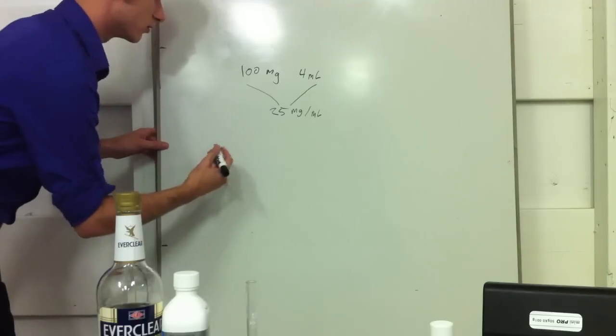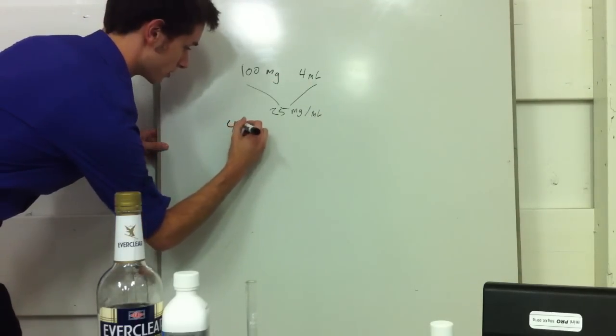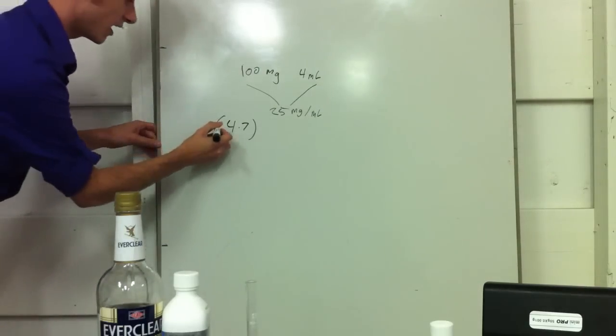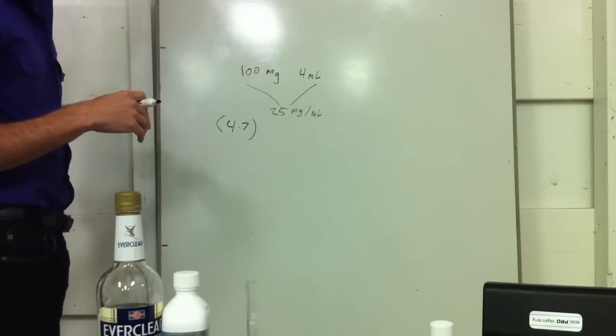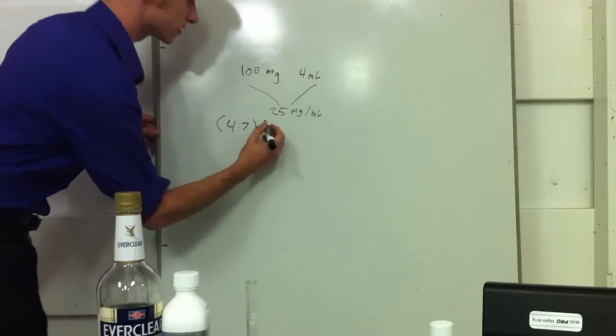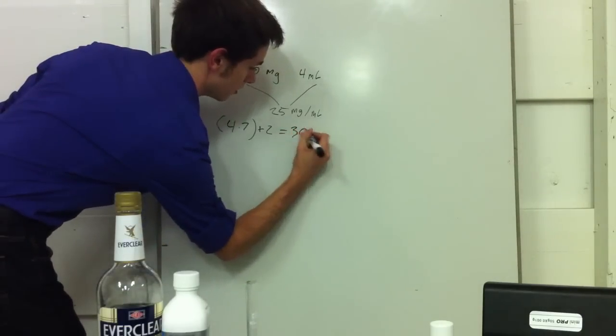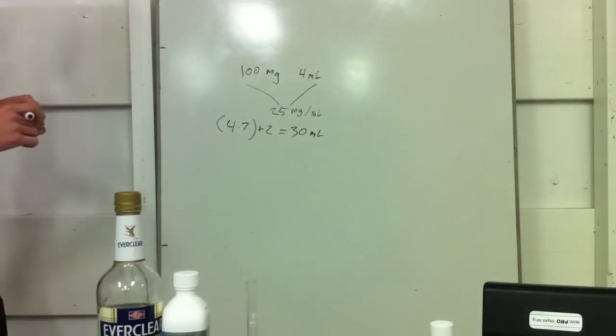So we know we're going to need 4 milliliters for 7 days. So 4 times 7. And then I always like to have a little bit of extra solution, an extra 2 milliliters. Just because I find that just through application you lose some and on that last day you want the full dose. It's nice to have a little leeway. So I add 2 to that. So that is a total of 30 milliliters of solution that we will make.